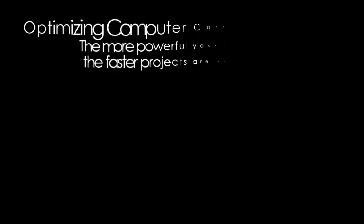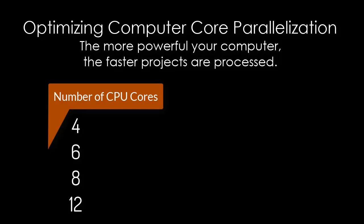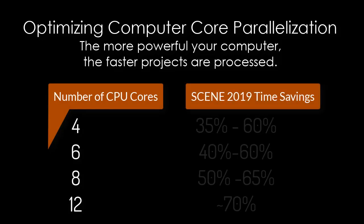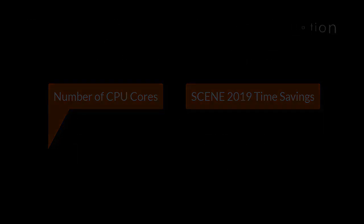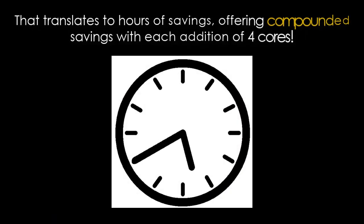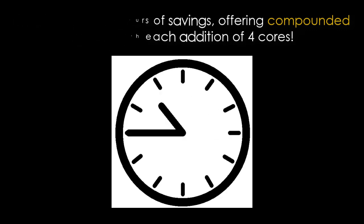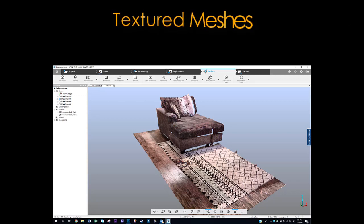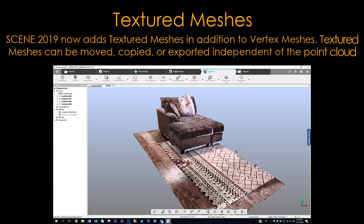Faster processing: optimizing computer core parallelization means the more powerful your computer, the faster projects are processed. That translates to hours of savings, offering compounded savings with each addition of four cores.